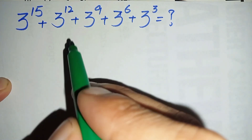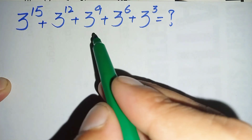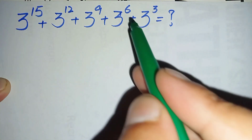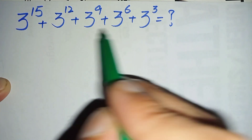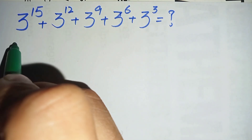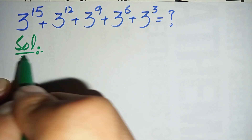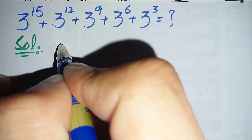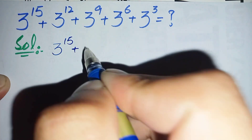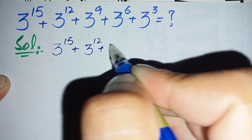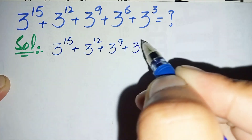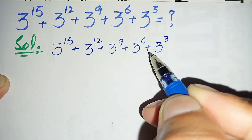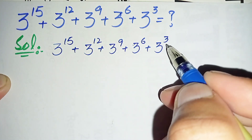Hi everyone, welcome. We will solve and find the value of this interesting exponential math problem: 3 to the power 15 plus 3 to the power 12 plus 3 to the power 9 plus 3 to the power 6 plus 3 to the power 3. To solve this problem properly, first we will write the solution and rewrite this problem.